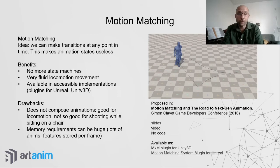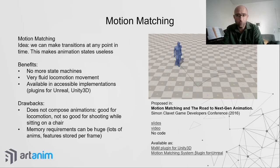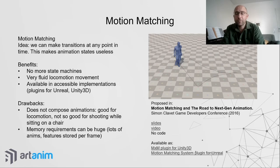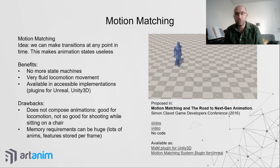One drawback of motion matching is that it does not compose animations well — for example, it's perfect for locomotion, but if you want to combine a shooting animation with a sitting animation to have someone shoot while seated, it cannot do that. There is also a significant technical drawback: because you store all movements and transitions, it creates a huge amount of data.